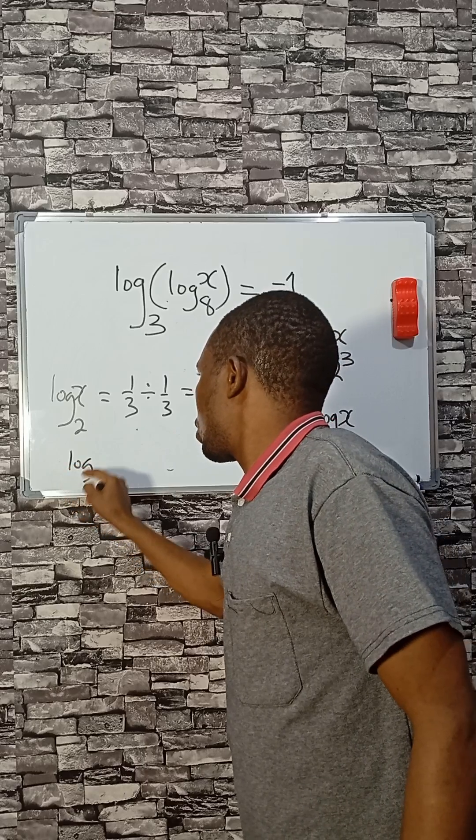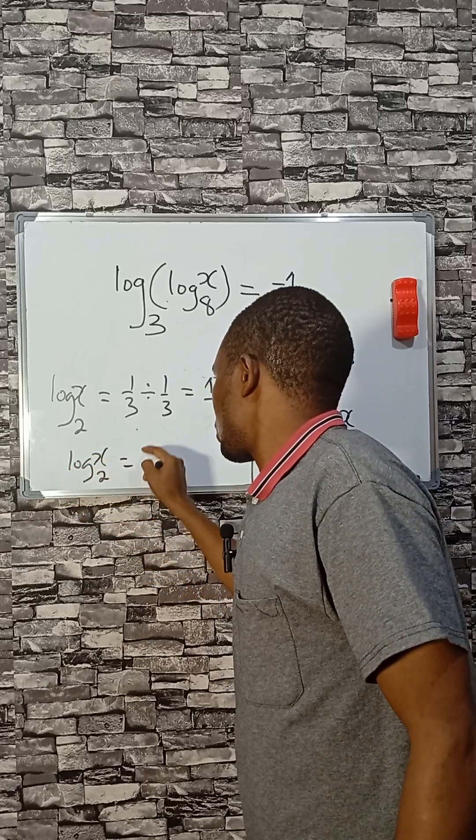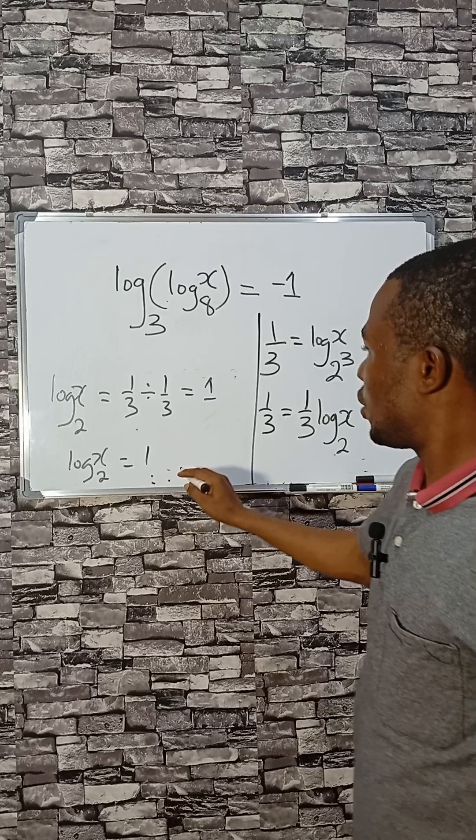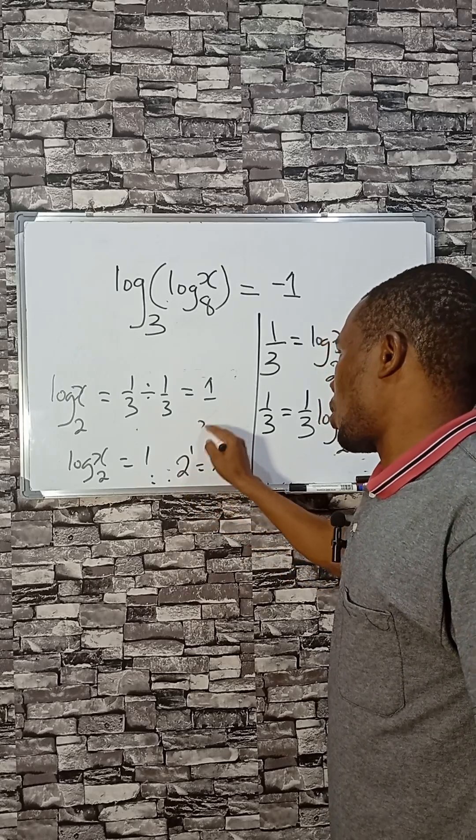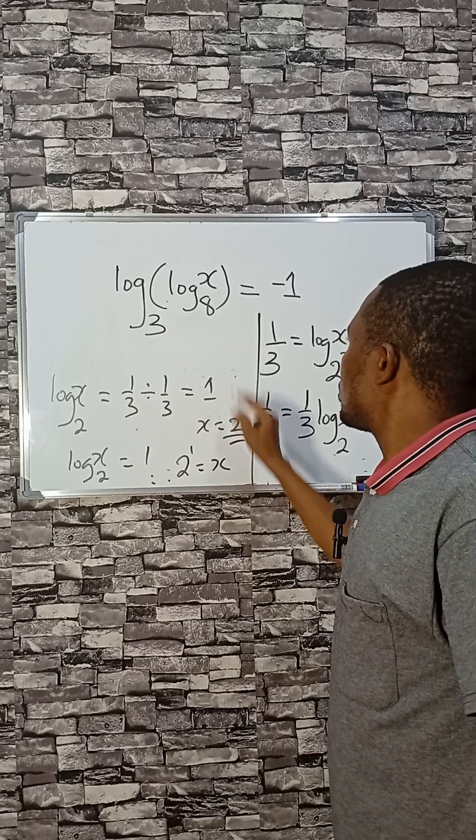So log X base 2 equals 1. The same thing applies here. Therefore, 2 to the power 1 equals X, and X equals 2. So the answer is 2.